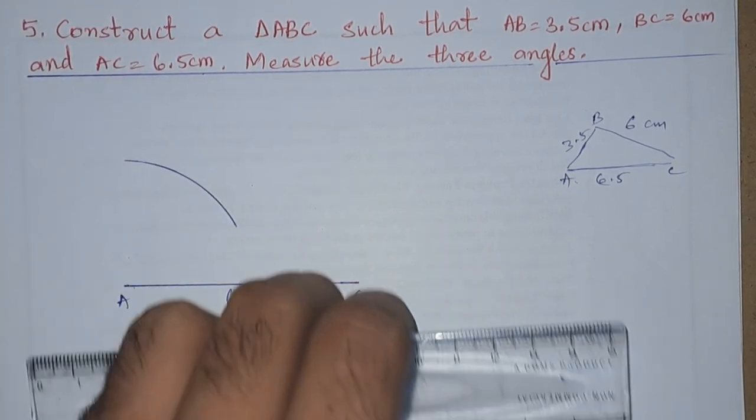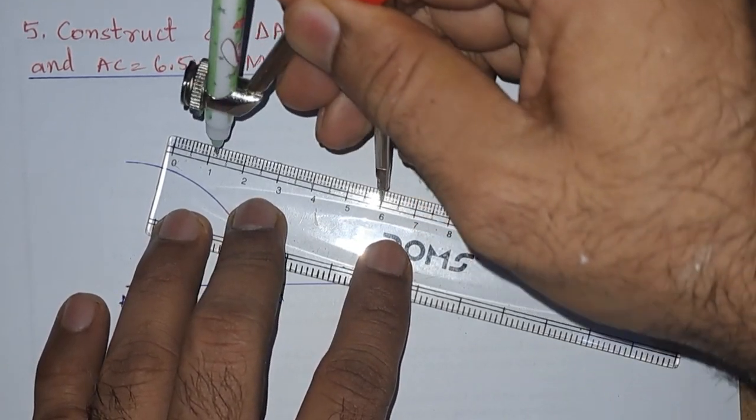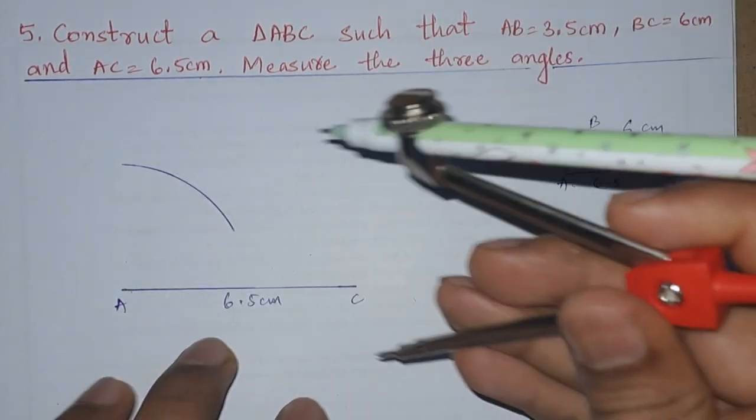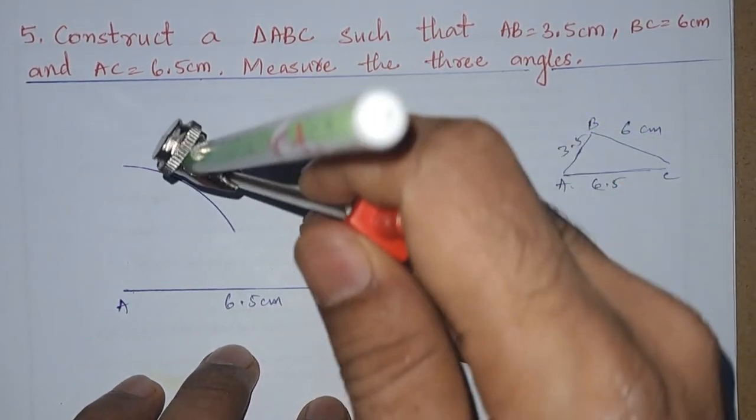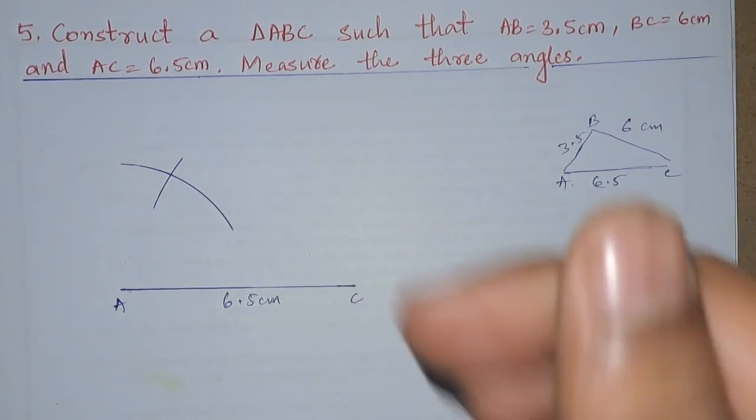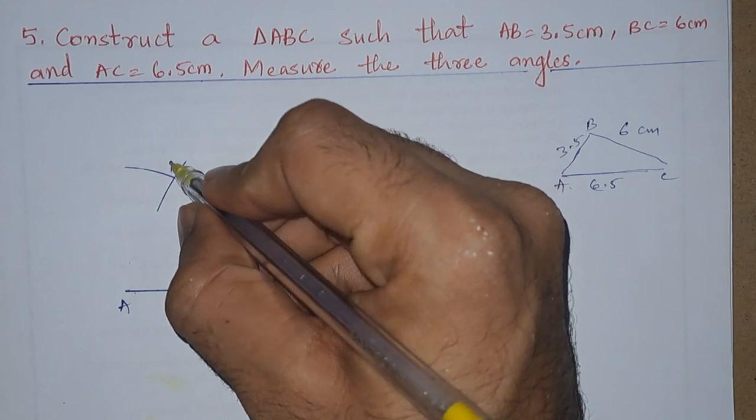Next for BC we have to draw 6 centimeters. So it is 6 centimeters. Now we will draw from C to B. So this point, it is intersecting at the point where these two arcs intersecting. This is B.